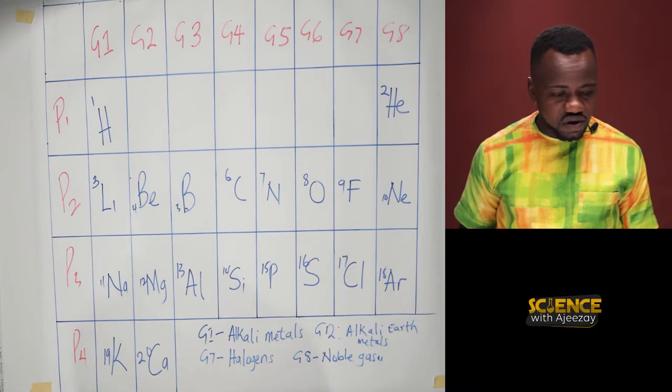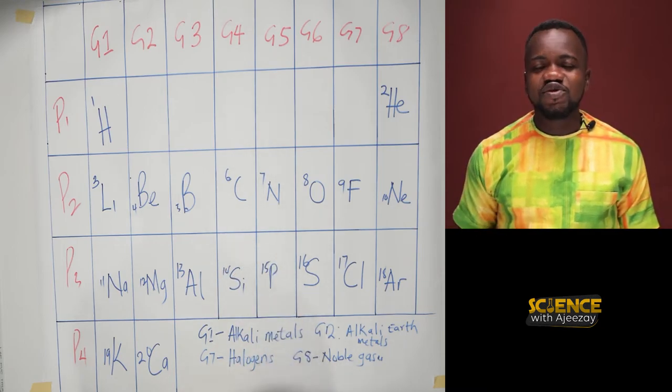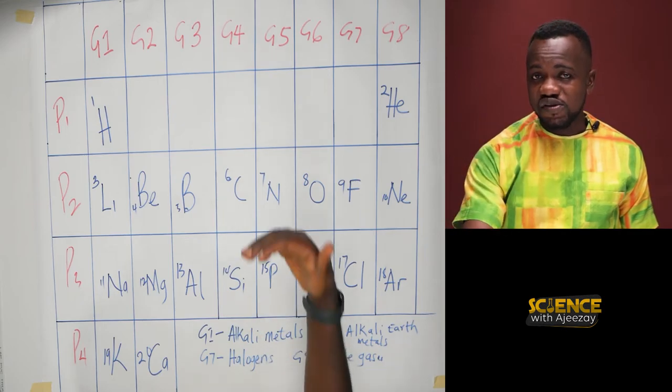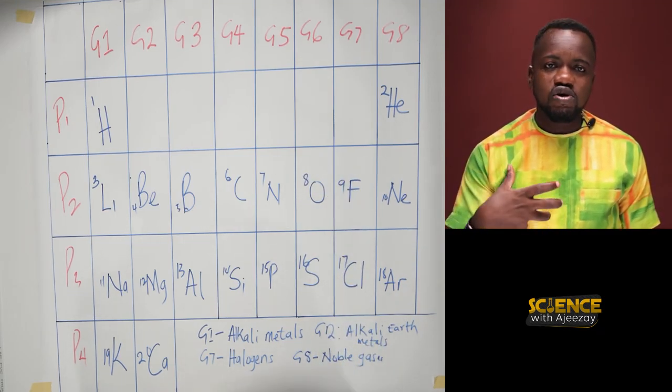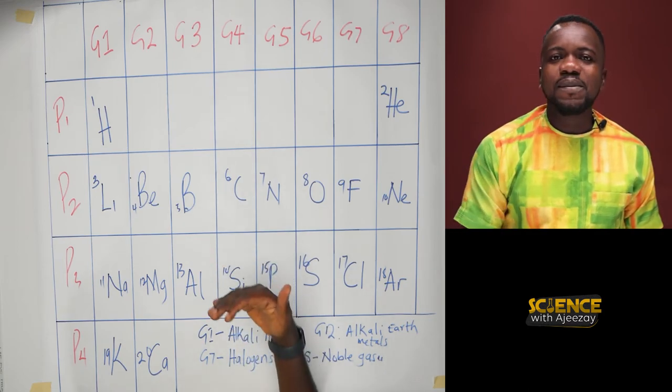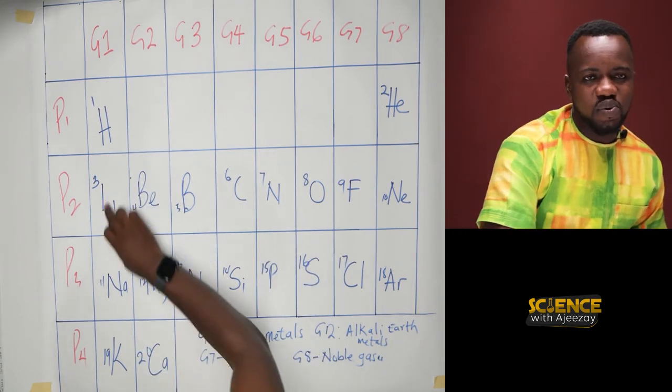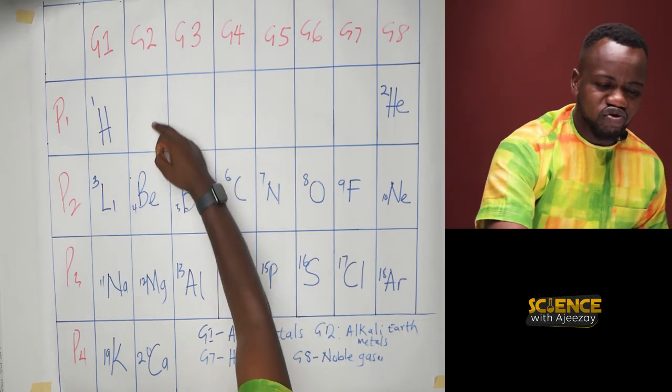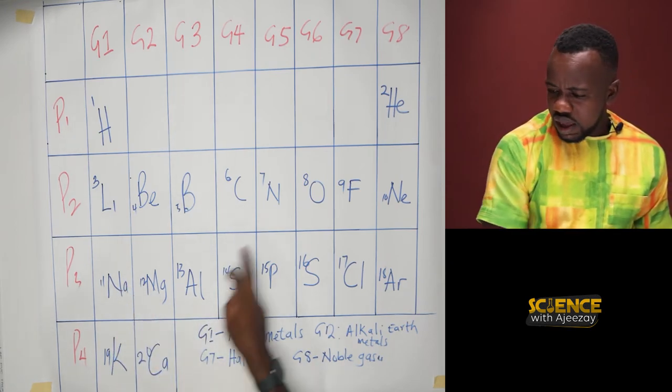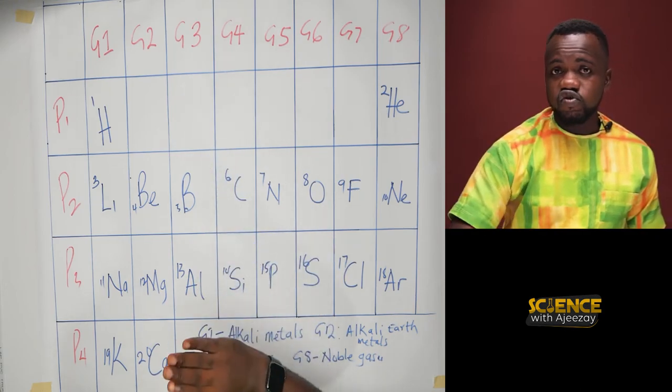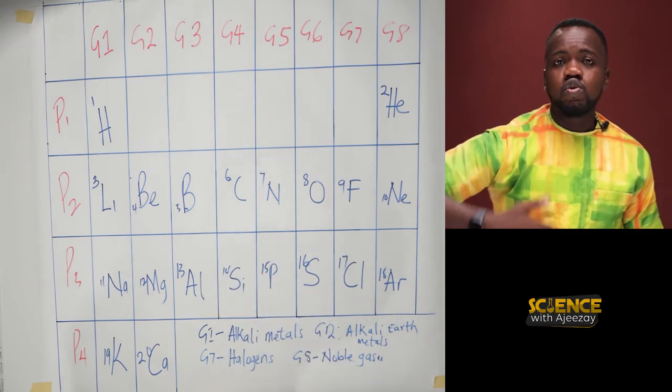This has been another interesting episode for Science with Ajese: periodic table. I believe you learned something new. When you are given the atomic number, knowing the atomic numbers of the first 20 elements, you should be able to draw your own periodic table. This will help us tell the number of ions an element or a metal should have. All those in group 1, they have a charge of plus 1. All those in group 2, they have a charge of plus 2. Once you have a compound, sodium and then chlorine, with the help of the charges you can predict the compound. Group 3 elements have a charge of plus 3.